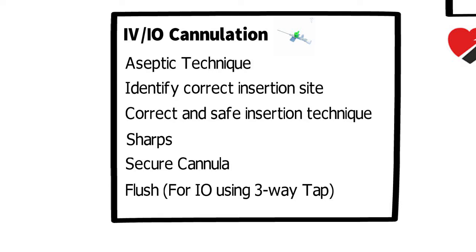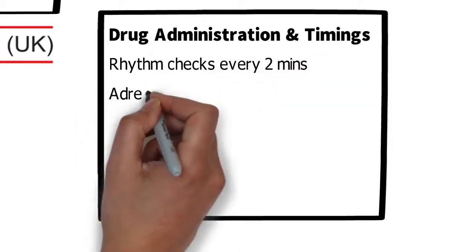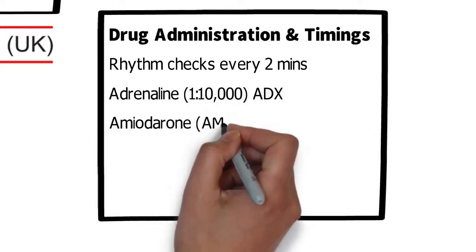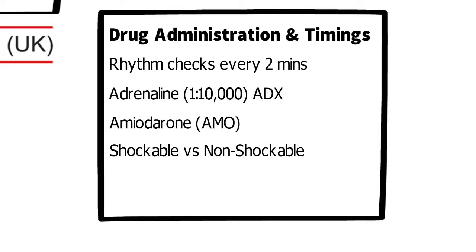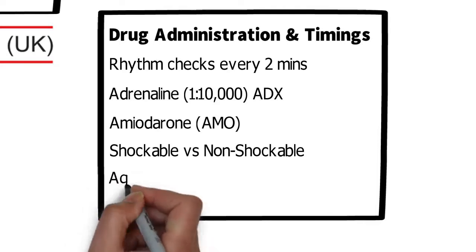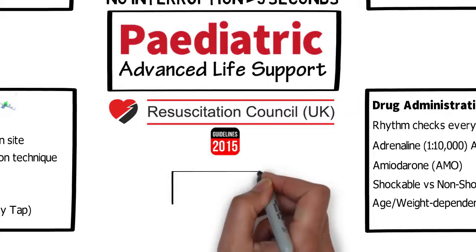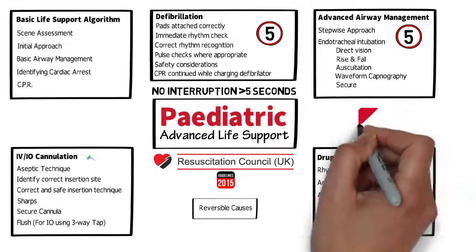Once we've gained IV access we need to consider drug administration and timings. The general principles are the same as adult ALS with variations in dosages. Key points are rhythm checks every two minutes, administration of adrenaline 1 in 10,000 and amiodarone, with timings dependent on whether the patient is in a shockable or non-shockable rhythm. Dosages are age or weight dependent. We can then start to think about reversible causes.